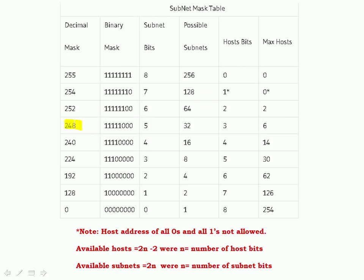We've got a decimal number of 248, that translates into a binary number here. We're using 5 bits for the subnet — 11111 — which gives us a possible 32 subnets. We're using 3 bits for the host, that's 3 zeros, which gives us a possible 6 host addresses. You can't use all zeros and all ones, so if we've got 3 host bits, the maximum is 2 to the 3, which is 8, minus 2, which leaves us with 6. Similarly, 2 to the 4 is 16 minus 2 is 14, and 2 to the 5 is 32 minus 2 is 30.